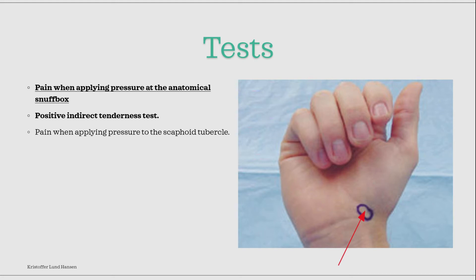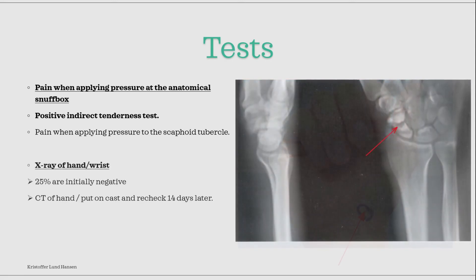Another sign to know is that when you apply pressure to the scaphoid tubercle, this is less sensitive compared to the anatomical snuffbox, but should be tested for as well. On any indication of a possible fracture, an x-ray should be taken. It can either be taken of the whole hand, the wrist, or a more localized scaphoid view. I prefer a whole hand view in order to exclude other possible fractures.